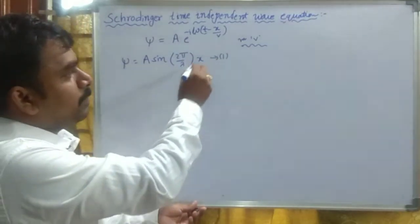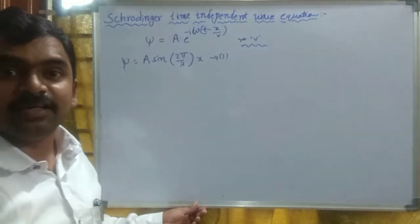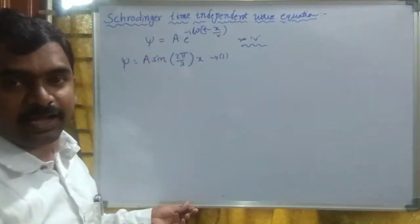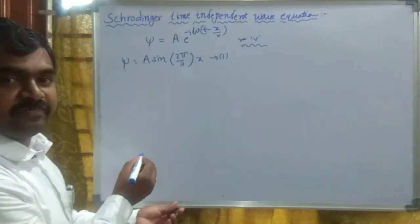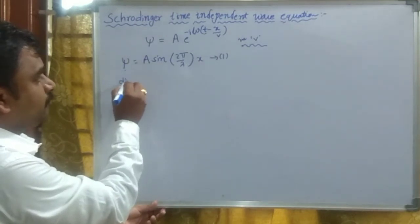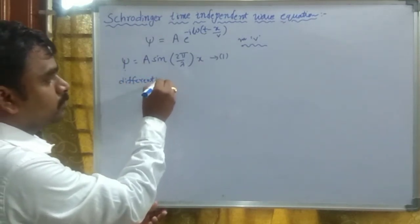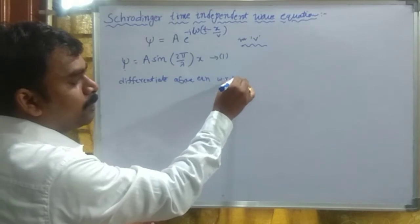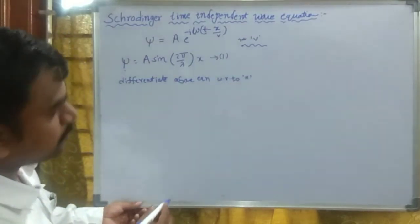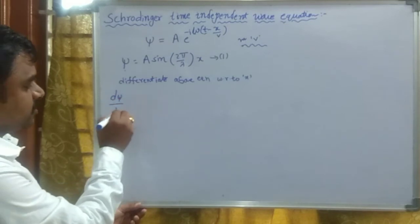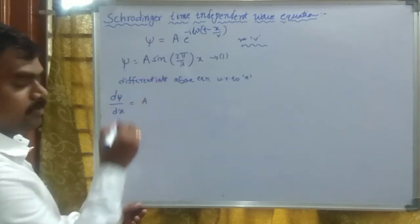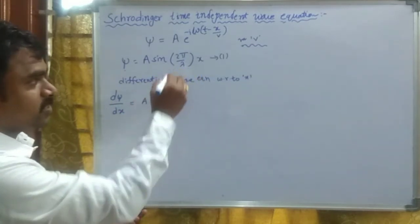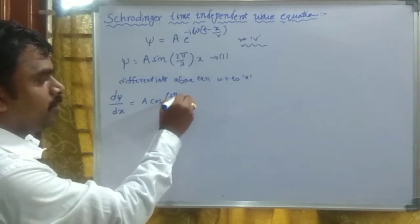So, ψ equals A·sin(2π/λ · x), where ψ represents the position of the particle in one dimension. Now we differentiate this equation once with respect to x. Differentiating, we get dψ/dx equals A — since A is constant — times cos(2π/λ · x).